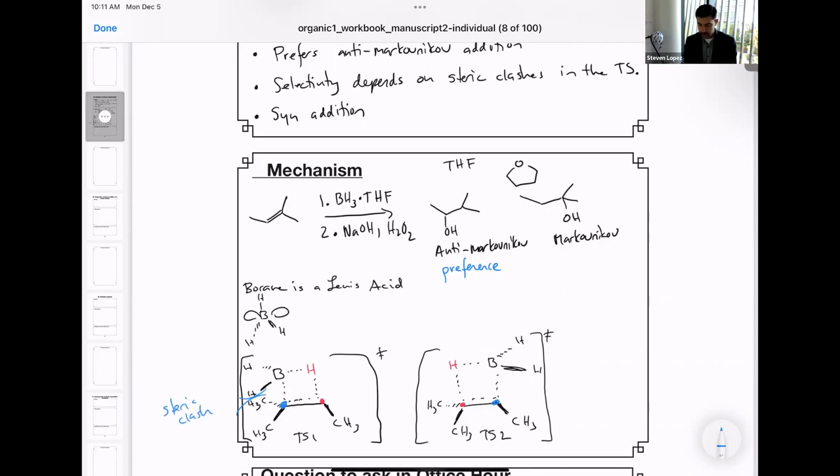If we look at transition state two, that steric clash is a lot reduced because now those hydrogens are on the other side of the molecule. So TS2 is lower in energy because there is less steric clash. So as a result, you have a structure that kind of resembles this, and then this borane, BH2, through a somewhat complicated mechanism that is outside the scope of this YouTube video, will be substituted to create a hydroxyl group. So this leads directly then to the major product.